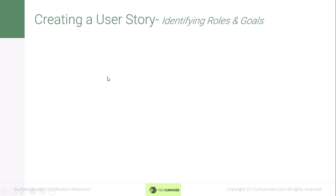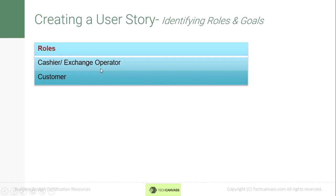For user story, everything starts with a user role. We basically have two roles here: first is the cashier, also called the exchange operator — for ease we will use 'cashier' — and the second role is the customer.